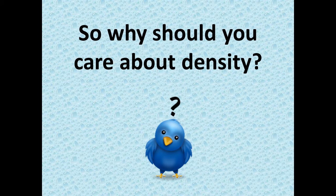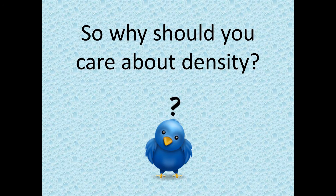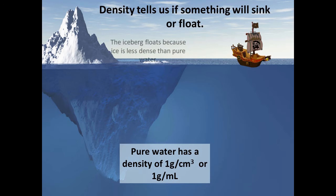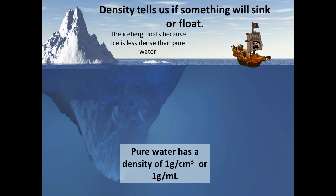So why should you care about density in the first place? Density tells us if something will sink or float. Pure water has a density of one gram per centimeter cubed, or one gram per milliliter — a very important number to remember. For example, an iceberg floats because ice is less dense than pure water.